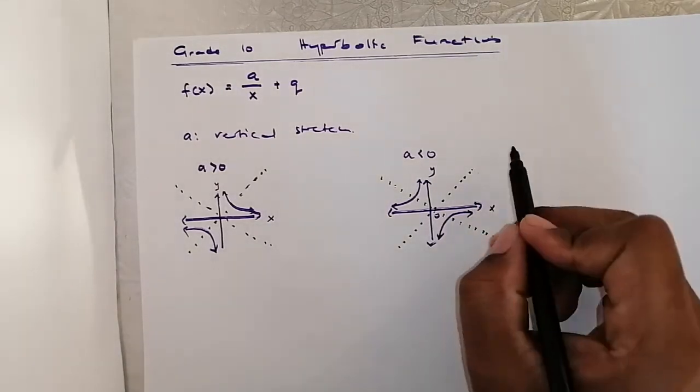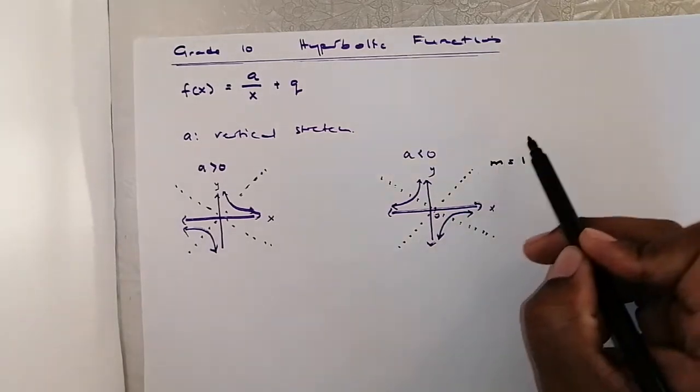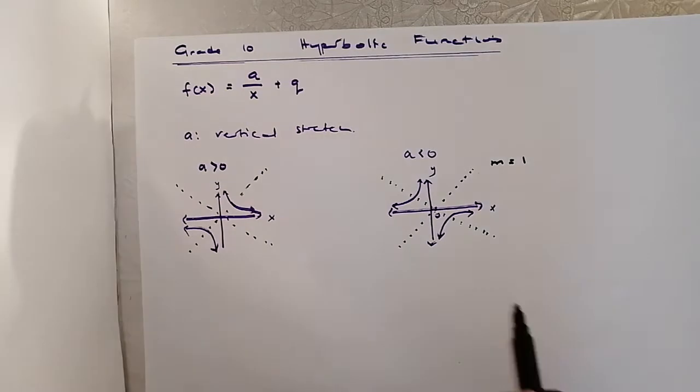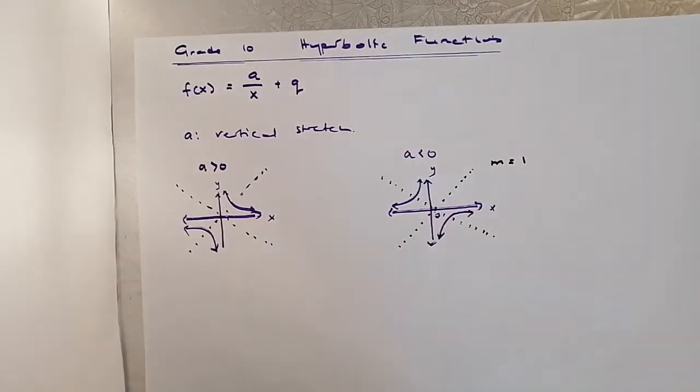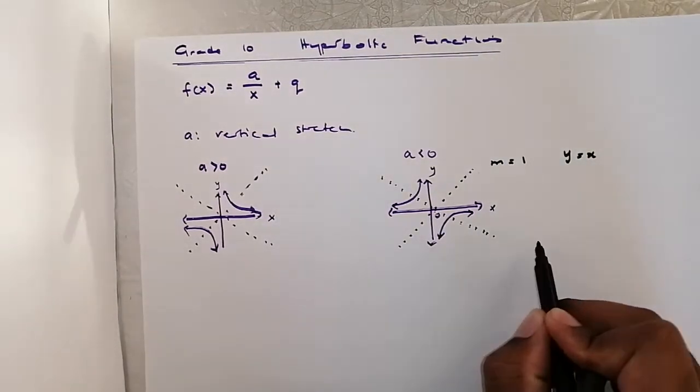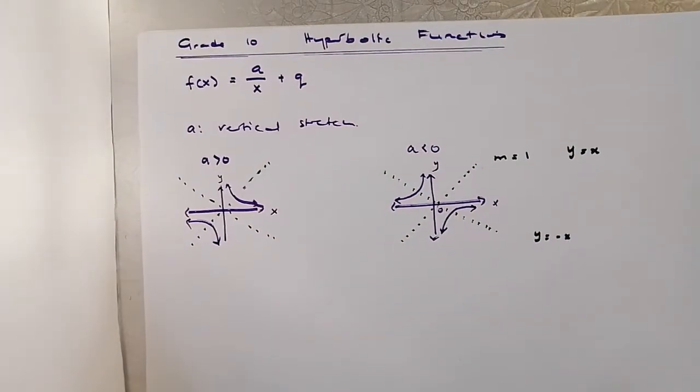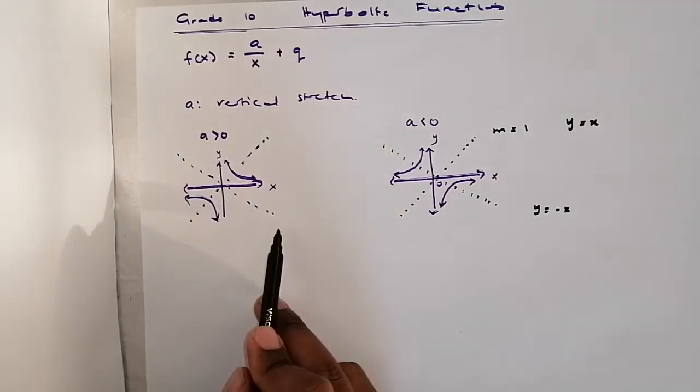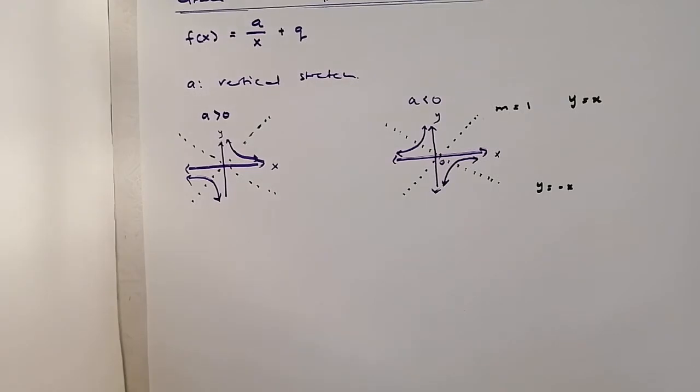So the gradient of this line is m equals 1. And as you have done linear functions, this line passes or cuts the x-axis at 0. So its equation will be y equals x and this one, y equals minus x. Do you get what I'm saying? Okay, and same applies here. The gradient of this line is 1 and the gradient of this line is negative 1.